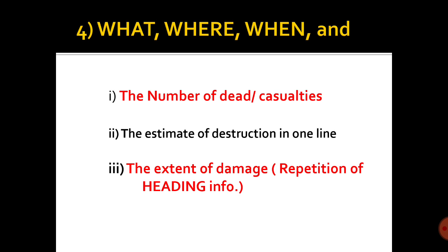Then starts the body of the report, which is my fourth point. This is WWW — what, where, when. It should have all the data: the number of dead, the number of casualties, and an estimate of the injured. Write the estimate of destruction of property as well, the extent of damage to life and property. Be more precise — if you've written the city name in the third point, then write the exact place where the accident happened, like '10 kilometers from Kishanganj railway junction'. It's a repetition of the heading but in a more detailed way.